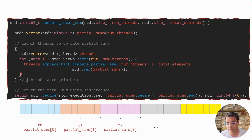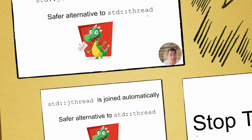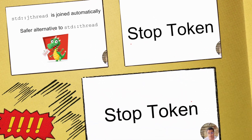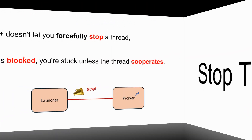In summary, std::jthread is joined automatically, which provides a safer alternative to std::thread. But this is not the entire story — std::jthread actually provides one more feature called the stop token, and this is actually very cool, so hear me out.